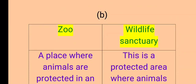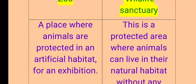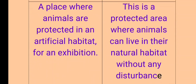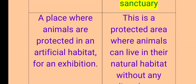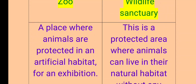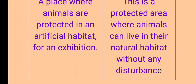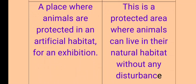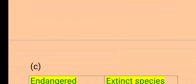Next, B: Zoo and wildlife sanctuary. A zoo is a place where animals are protected in an artificial habitat for exhibition. A wildlife sanctuary is a protected area where animals can live in their natural habitat without any disturbance.